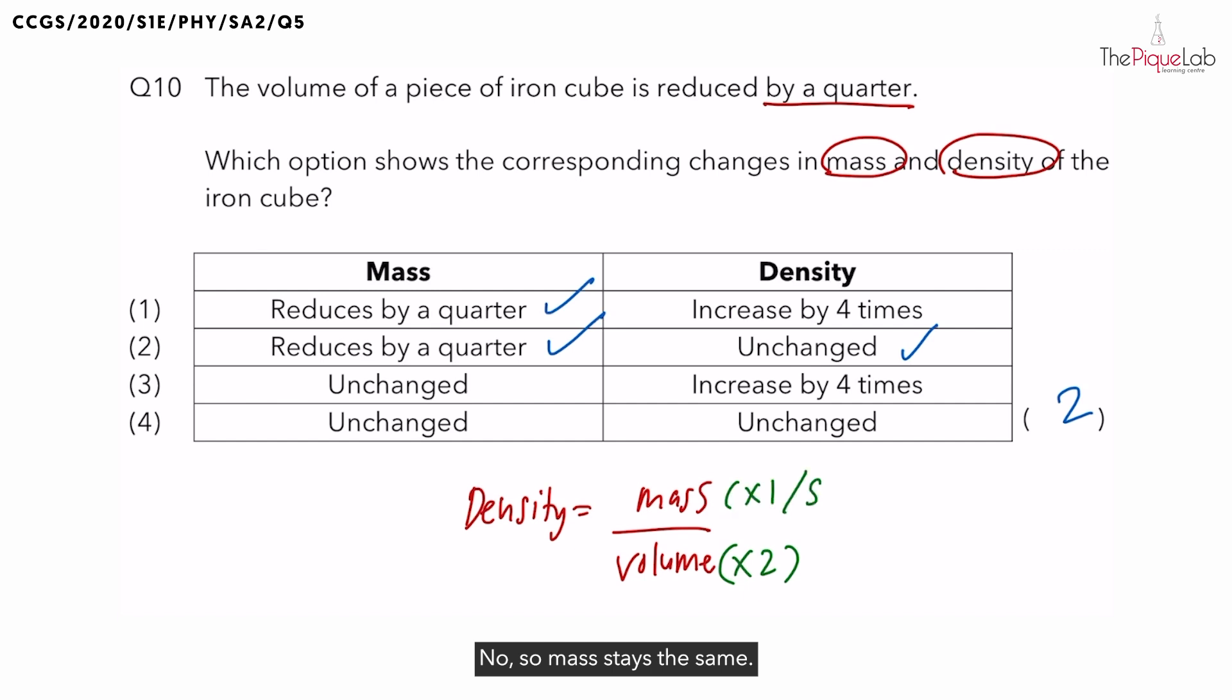So mass stays the same. So looking at this formula, what has happened to the density of the object when mass remains the same but volume doubles? Does density stay the same or change? Density has changed. Actually, density is halved.